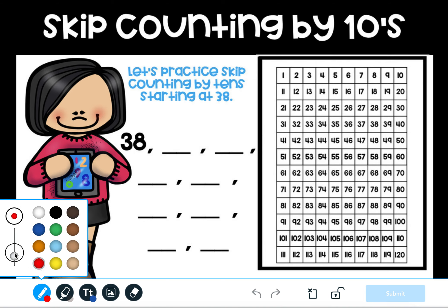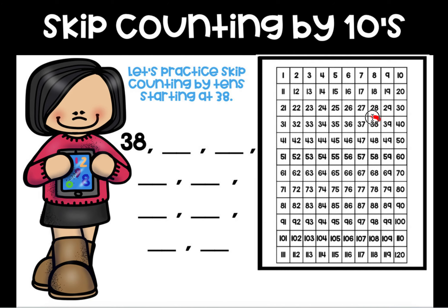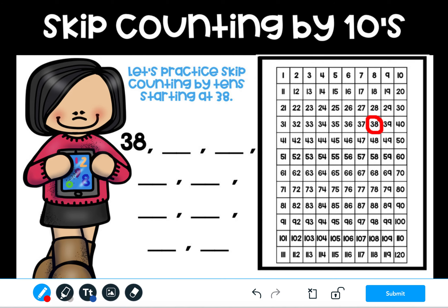I'm going to use my red pen and I'm going to circle the number 38 on my hundred twenties chart. I know here's 10, here's 20, here's 30. 38 is going to be after 30: 31, 32, 33, 34, 35, 36, 37 — 38 is right here. I'm going to put a circle around my 38 so that I know where I need to look when I'm starting.